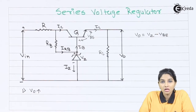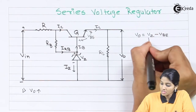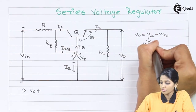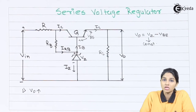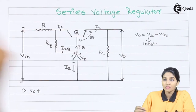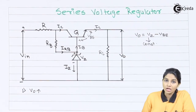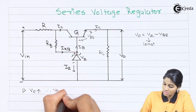In the first case, we consider V0 is increasing. Since V0 equals Vz minus Vbe, and Vz is the Zener voltage which is always constant, any increase in the output voltage causes an increase in Vbe. However, since output voltage is the difference between Zener voltage and Vbe, an increase in V0 actually causes a decrease in the value of Vbe.